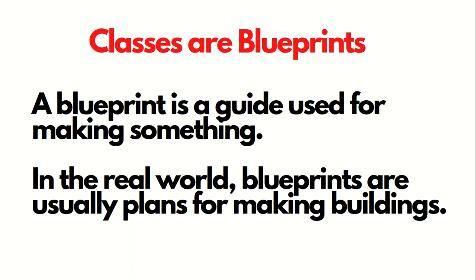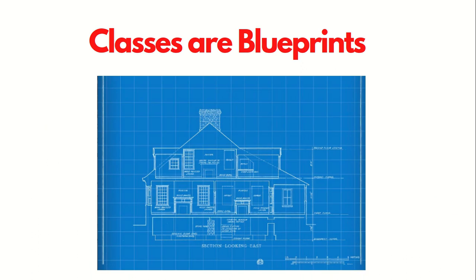We can start by specifying that classes are blueprints. A blueprint is a guide used for making something. In the real world, blueprints are usually plans for making buildings. We can create multiple buildings using the same blueprint, with each building being unique but having the same basic architecture. For instance, a blueprint might specify the number of rooms a house should have, while each house built using this blueprint will have the same number of rooms. One house might have rooms with white walls, another might have rooms with blue walls, making them unique entities, but still related to the blueprint.